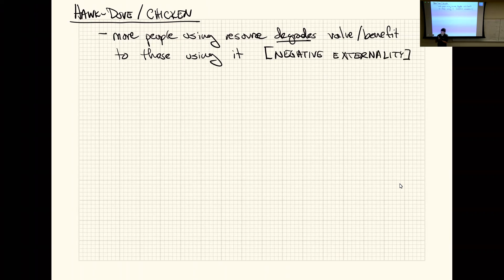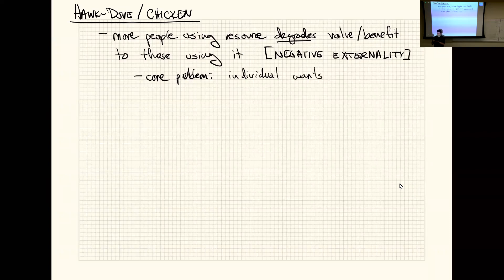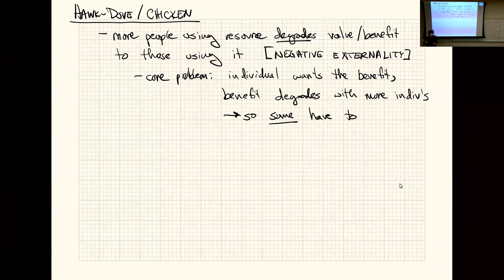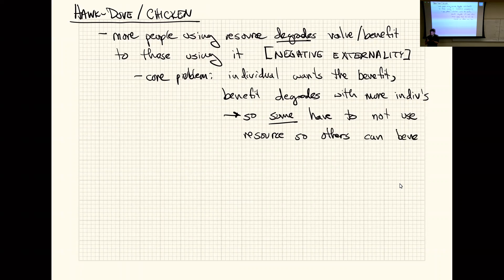The core problem in hawk-dove is that each individual wants the benefit, but the benefit degrades with more individuals using it. So some have to sit out and not use the resource so others can benefit — of course, that won't happen naturally. This ends up capturing the tragedy of the commons.